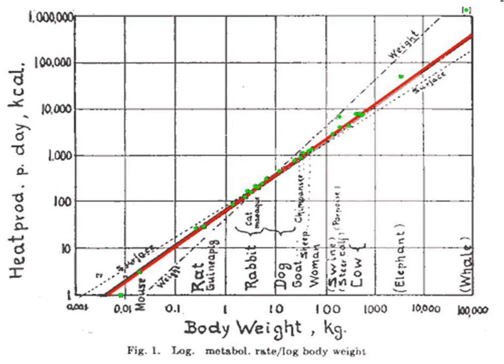Kleiber's law, named after Max Kleiber for his biology work in the early 1930s, is the observation that for the vast majority of animals, an animal's metabolic rate scales to the three-quarters power of the animal's mass.